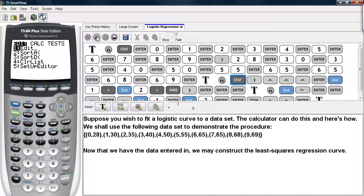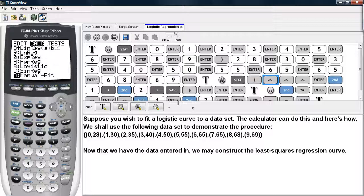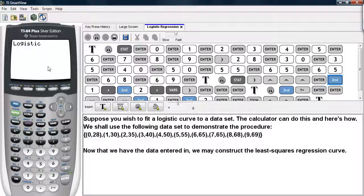We hit STAT, go under CALC, the middle option, and scroll until we get to the logistic option. We'll select this one.